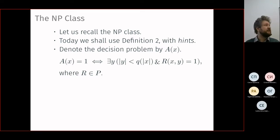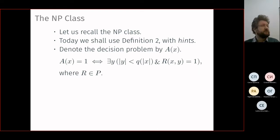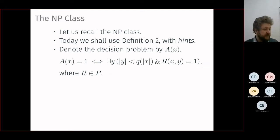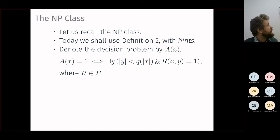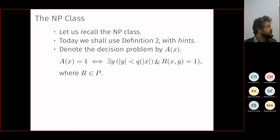If such a hint exists, the answer is yes; if not, we answer no. If we replace the existential quantifier with a for-all quantifier, it's called demonic choice — the person giving us the hint plays against us. This dual class is called co-NP, formed by complements of languages belonging to NP.